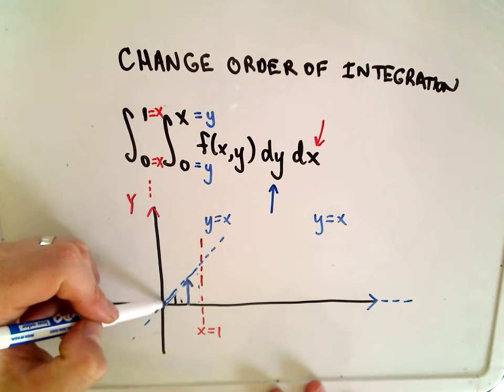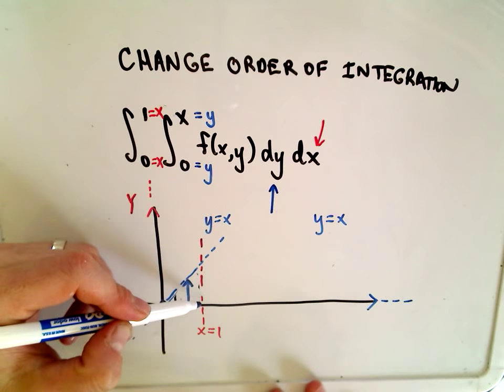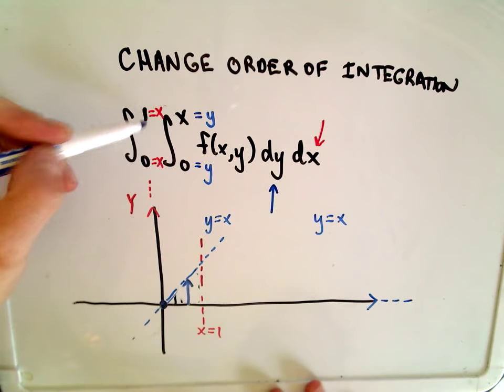Likewise, if you think about the smallest x coordinate that this region uses, it would be the x coordinate of 0. The largest x coordinate that it uses would be the x coordinate of 1.